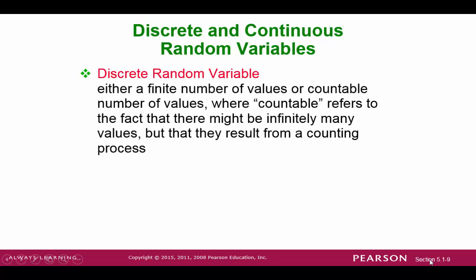A discrete random variable is a random variable that has a finite or countable number of values. And when we say countable, we mean countable like we can count them 1, 2, 3, etc. So even though it might go to infinity, the idea is that we're still able to count them.